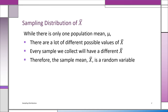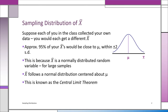Of course, there's only one mu — there's only one population mean — and we call that mu, and chances are we don't know what it is.